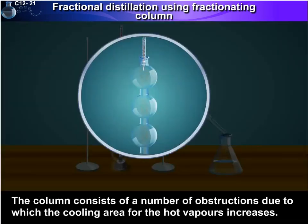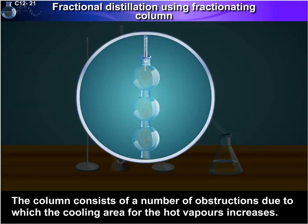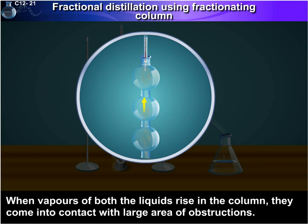The column consists of a number of obstructions, due to which the cooling area for the hot vapours increases. When vapours of both the liquids rise in the column, they come in contact with a large area of obstructions.